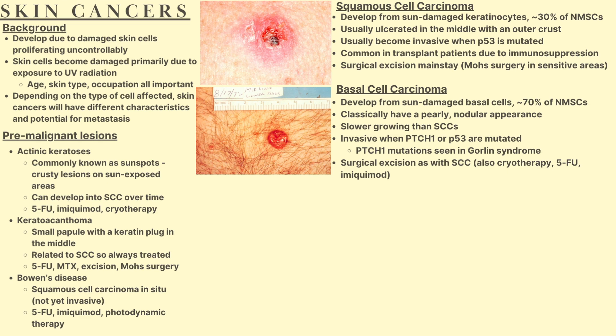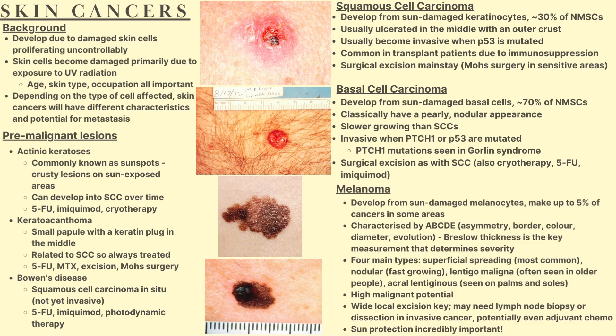The next major type is basal cell carcinoma (BCC), which develops from sun-damaged basal cells — the stem cells of the skin. BCCs account for about 70% of non-melanoma skin cancers. They classically have a pearly nodular appearance, as seen in the image. They're slower growing than SCCs with less malignant potential. BCCs can become invasive when PATCH1 or p53 are mutated; PATCH1 mutations are seen in Gorlin syndrome. Surgical excision is the mainstay, but cryotherapy, 5-FU cream, and imiquimod cream can also be used.